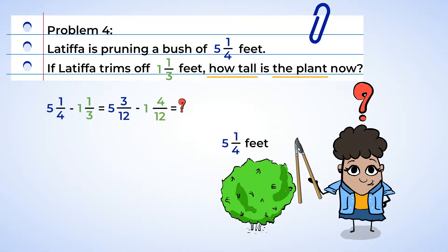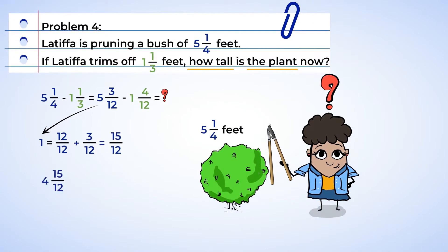So it looks like we need to break down a hole into twelfths in order to borrow. So we're going to take one hole from five and we're going to break it into 12 twelfths. And then we're going to add in the numerator the other three. And voila, we have 15 twelfths. Much better. 15 twelfths minus 4 twelfths is 11 twelfths. So 4 minus 1 equals 3. And now we know the plant is 3 and 11 twelfths feet tall.